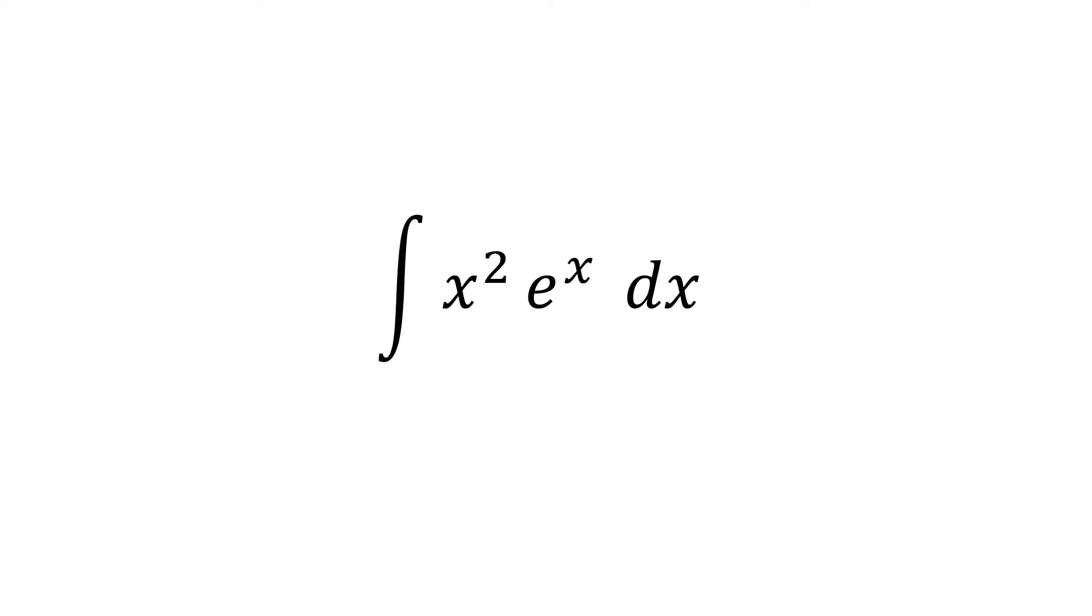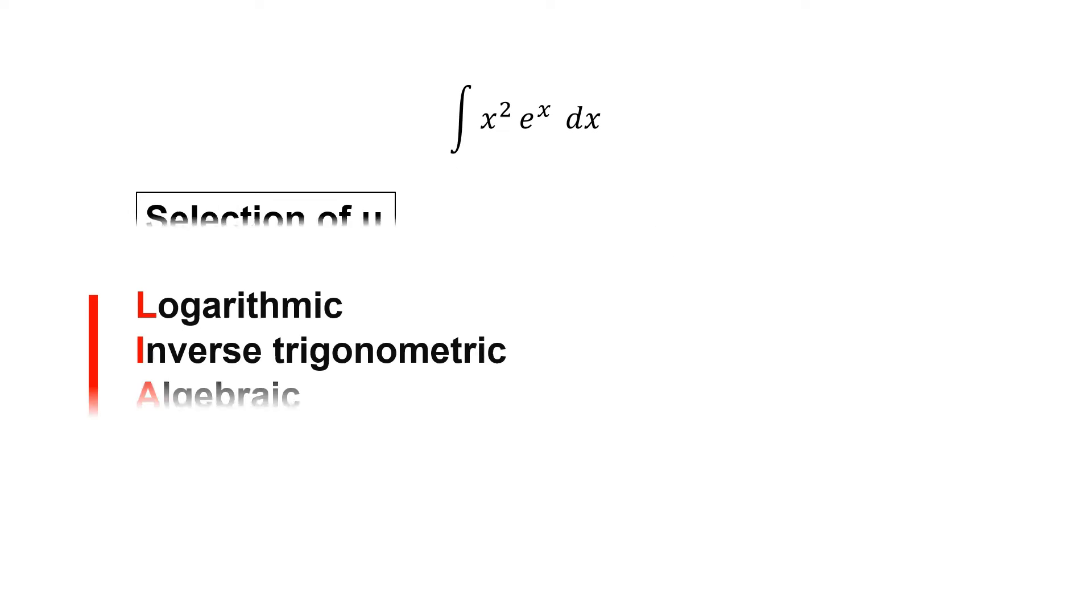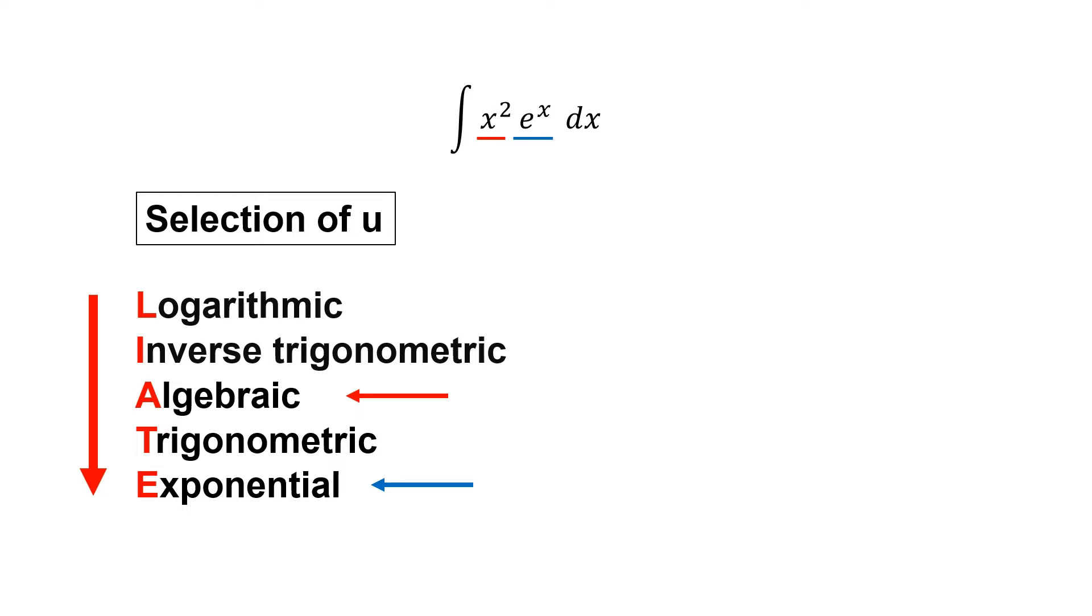Solving this integral using integration by parts. The first step is to choose u and dv based on the LIATE rule. We have x squared as u and the remaining part becomes dv.